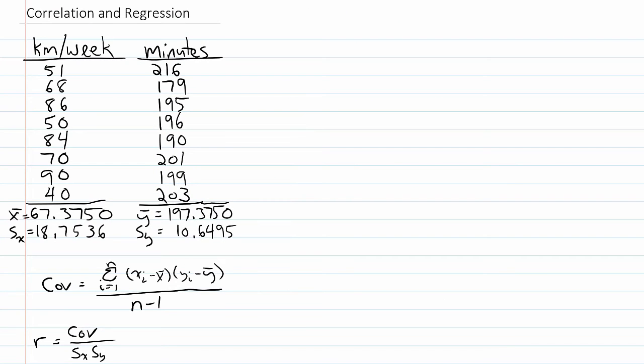The data for this problem are shown on the left. The first column is the number of kilometers run per week, and the second column is the marathon finish time in minutes. Beneath each column, I have already computed the mean and standard deviation for each variable.